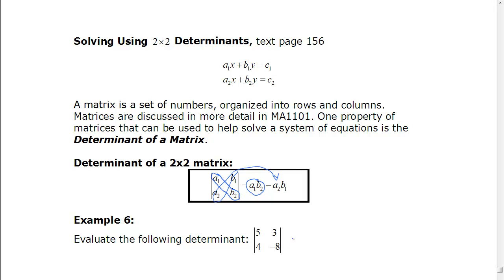So let's find this determinant. We're going to multiply 5 with negative 8, and subtract 3 multiplied by 4. That's negative 40 minus 12, which is negative 52. And that's the determinant of this 2-by-2 matrix.